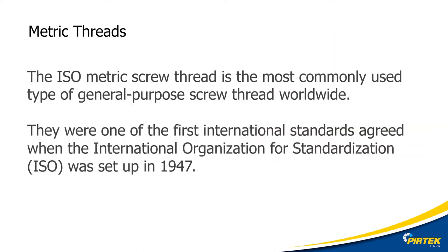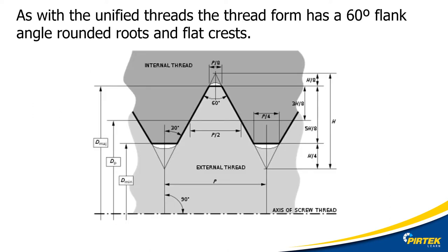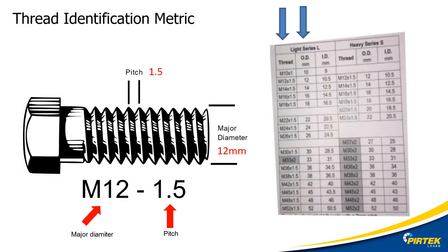The ISO metric thread is now the most commonly used general purpose screw thread type in the world. Like the Unified thread, it has 60 degree flank angles, a rounded root, and a flat crest. Unlike inch-based threads, metric threads are identified by the outside diameter and the pitch — the distance between the peaks of the thread.